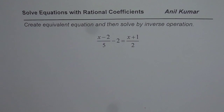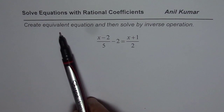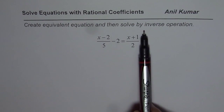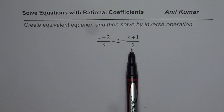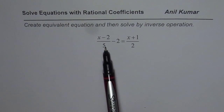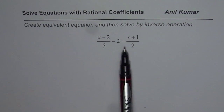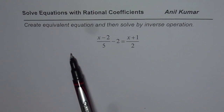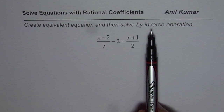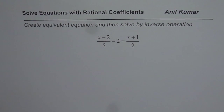I am Anil Kumar and here is a practice question for you. You need to solve equations with rational coefficients. The strategy we have learned is to create an equivalent equation and then solve by inverse operation. First, you create an equivalent equation by multiplying each term by the lowest common denominator. Once you have an equation without the fractional part, you perform the inverse operations and solve for x.